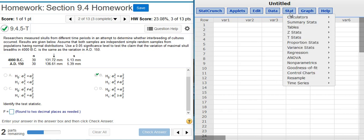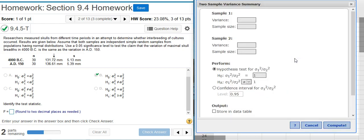So here we have StatCrunch. I'm going to go to Stat, Variance Stats because we're dealing in variances. Two Sample because we have two samples we're comparing. With Summary because we don't have actual data, just summary stats.